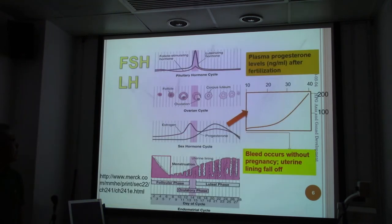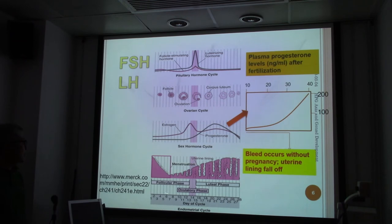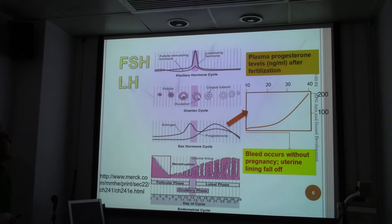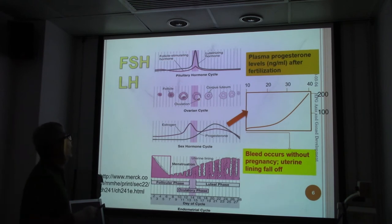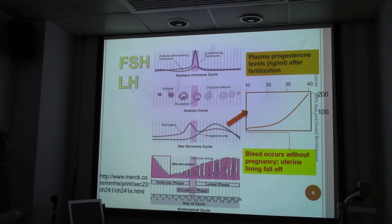Looking at the role of FSH in the ovary, FSH stimulates the follicles, most importantly driving ovulation. During the ovulation cycle, luteinizing hormone peaks and is required for ovulation — specifically, it controls the formation of the corpus luteum and the release of the egg. Estrogen rises before ovulation and stimulates it.